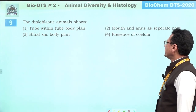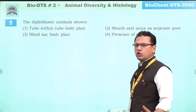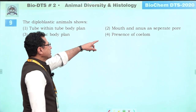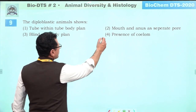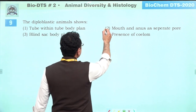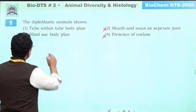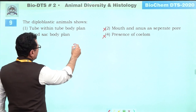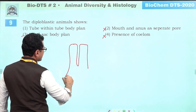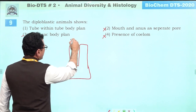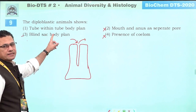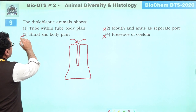Diploblastic animals: these are cnidarians and ctenophores. In them, there is no coelom, and there is no separate mouth and anus opening — only one opening exists. They show blind sac body plan, meaning there is only one opening in the body which serves the purpose of both mouth and anus. This is called blind sac body plan. So this is the right answer.